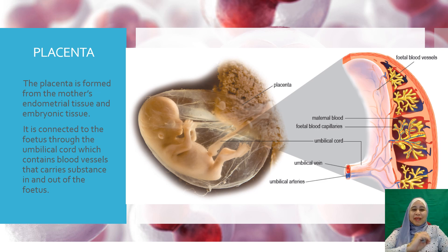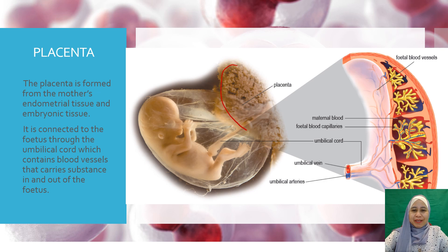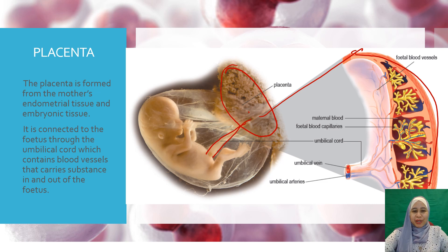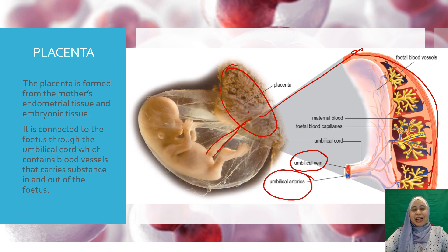Placenta is formed from the mother's endometrial tissue and the embryonic tissue. You can see this is the placenta. This placenta is connected to the fetus through the umbilical cord, and this umbilical cord contains blood vessels — the umbilical vein and the umbilical arteries. These blood vessels will carry substances in and out of the fetus.